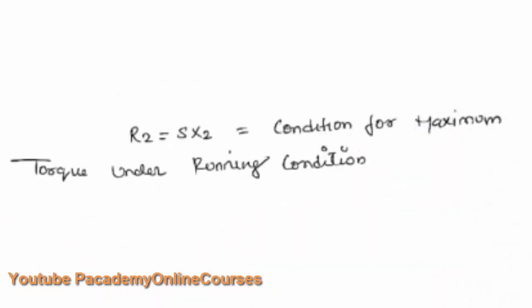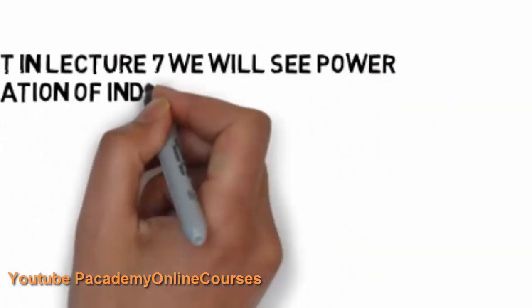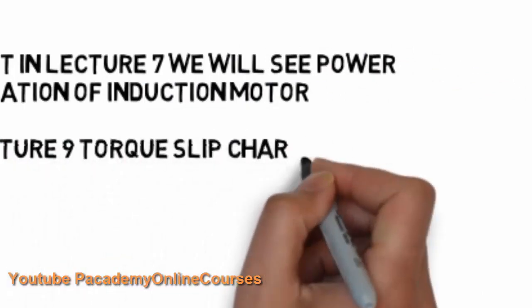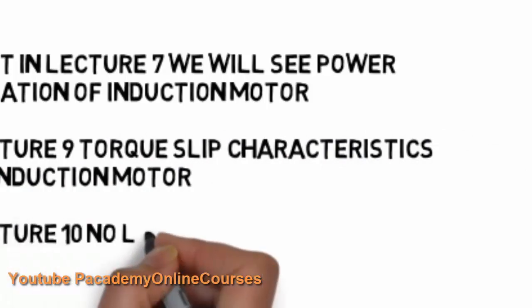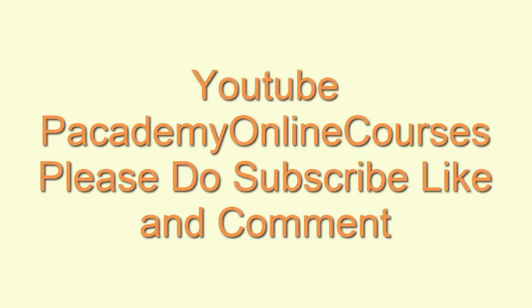While the motor is running, the condition for maximum torque production is that rotor resistance R2 equals slip times rotor reactance (R2 = S·X2). When this condition is met, the maximum torque — also known as pull-out torque — is produced. Beyond this torque, the motor loses control. In the next lecture, we will look at the power equation of the induction motor.